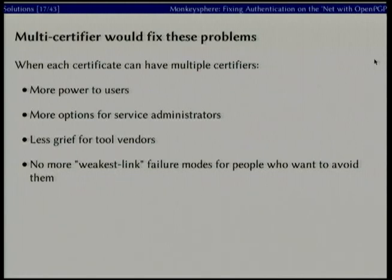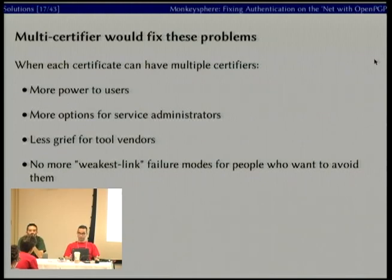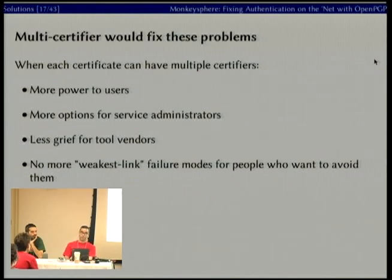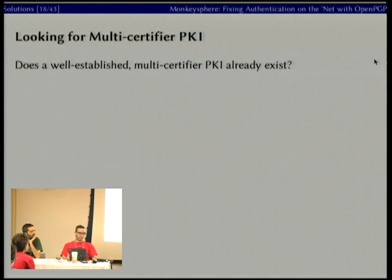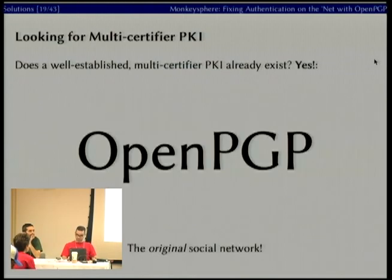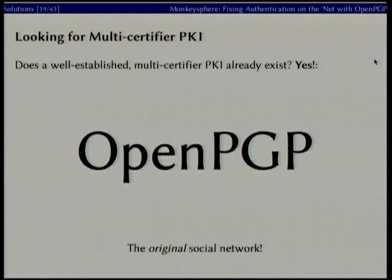If we want to avoid single-certifier or no-certifier issues, we can hopefully find a multi-certifier infrastructure where each certificate can be identified by more than one certification. Everyone has more power to make assertions and choose which assertions to trust. Service administrators have more options for who they trust. There's less grief for tool vendors and we avoid the weakest-link failure modes. As we worked on the project, we were looking for a multi-certifier PKI — and there happens to be one: OpenPGP, the original social network.